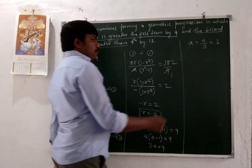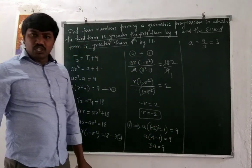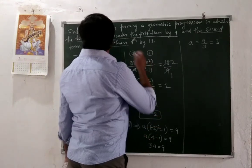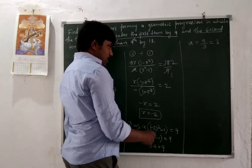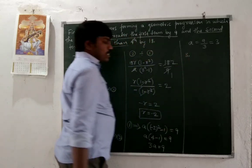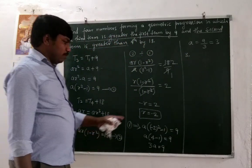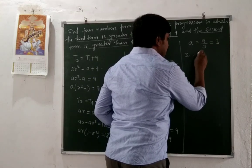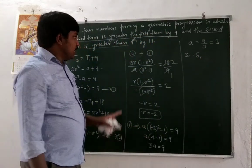The common ratio is -2 and the first term a is 3. The first four terms of the GP: first term is 3 (that is a), second term is a·r = 3 × (-2) = -6.